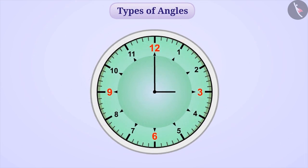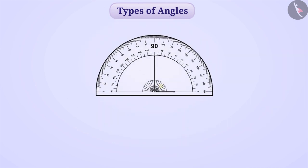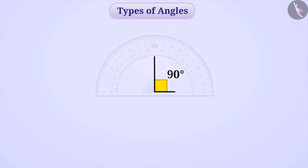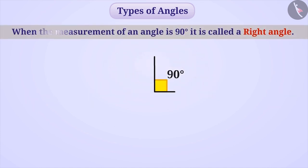Here, a clock is shown where one hand is on 12 and the other hand is on 3. If we measure the angle between both the hands, we will get 90 degrees. If the measurement of an angle is 90 degrees, then it is called a right angle.